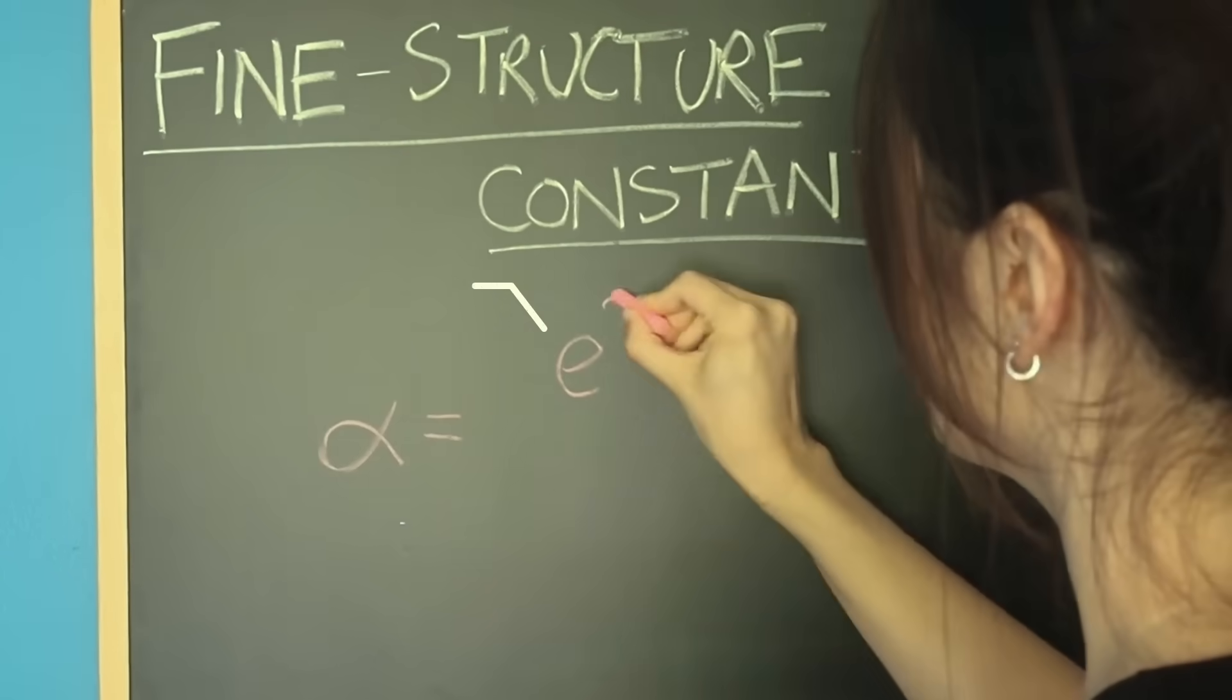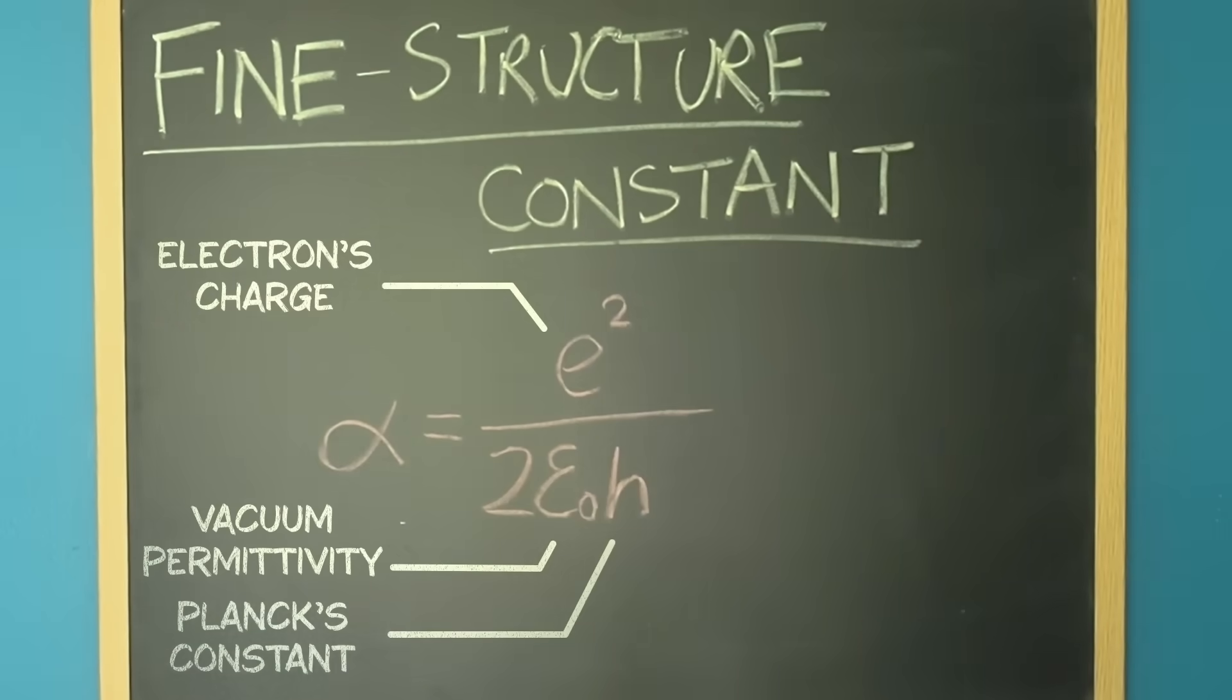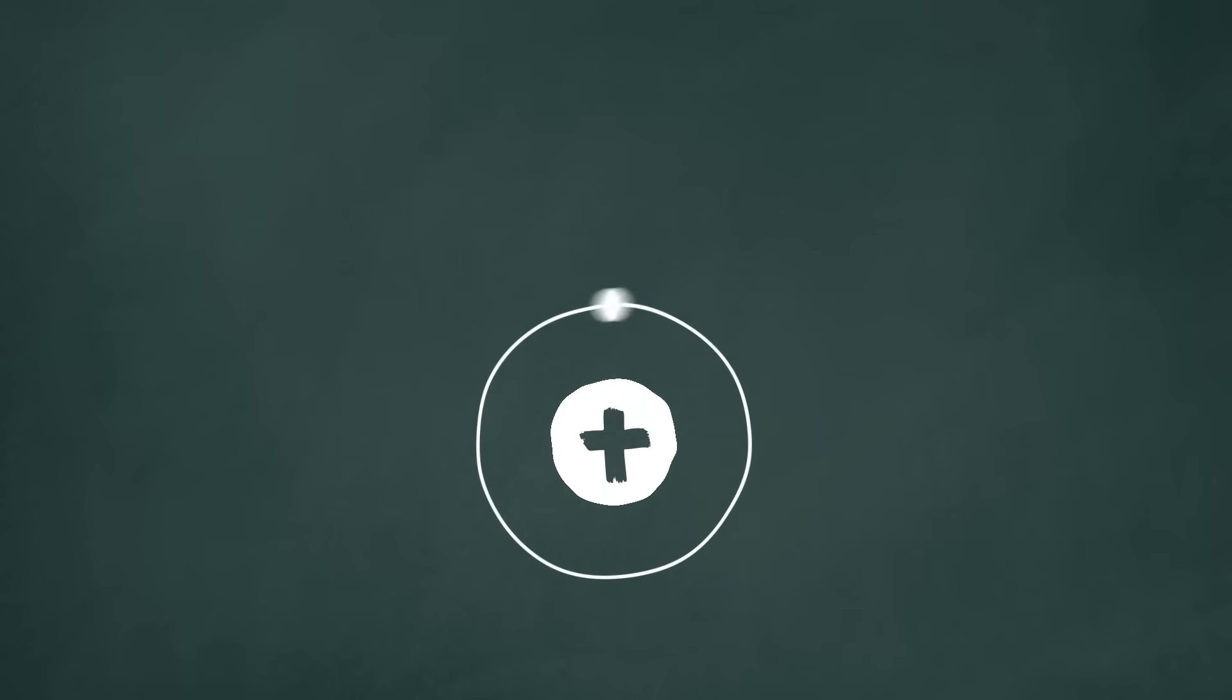It combines the electron's charge, the vacuum permittivity, Planck's constant, and the speed of light, and has the value of about 1 over 137. Just like the gravitational constant tells us the strength of gravity, the fine structure constant tells us the strength of electromagnetism.